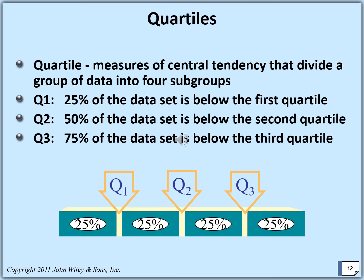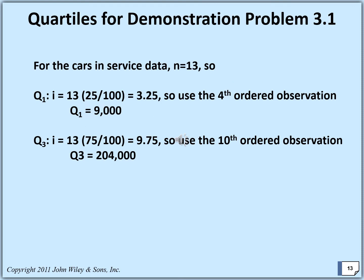If we arrange in descending manner, Q1 and Q3 will change their positions. You must notice that. For the previous demonstration problem 3.1, we already computed the second quartile, the median. For Q1, i equals 13 times 25 divided by 100 equals 3.25, so we round up to the fourth observation: Q1 equals 9,000. For Q3, i equals 13 times 75 divided by 100 equals 9.75, so we go up to the tenth observation: Q3 equals 204,000. You may notice that Q1 is less than Q2, which is less than Q3.